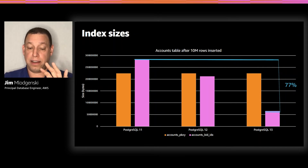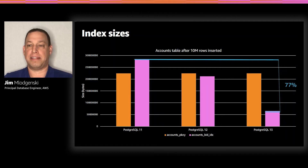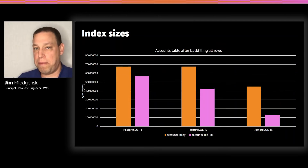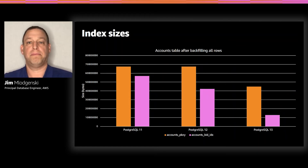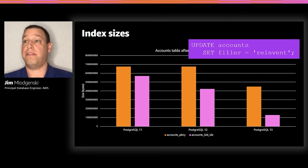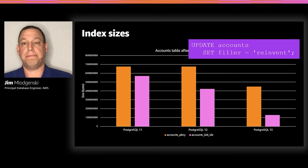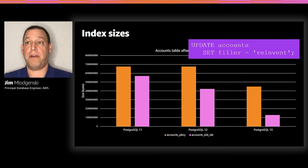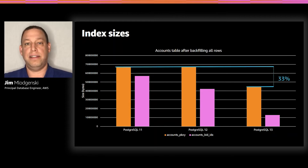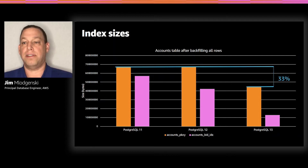That 77% savings means your entire index is more likely to fit in cache and has a lot less work to do to scan it. If we update the table — for example, backfilling the filler column to the string 'reinvent' across all rows — Postgres multi-version concurrency control comes into play. In Postgres, an update creates a new version of a row in the index, so even a primary key will have duplicate entries with different versions. Postgres 13's de-duplication optimization still applies here — primary key indexes were 33% smaller in Postgres 13 over Postgres 11 and 12.